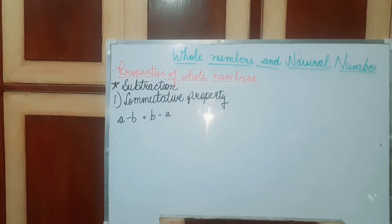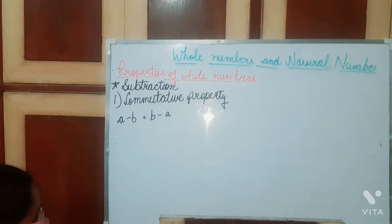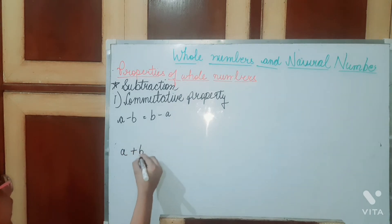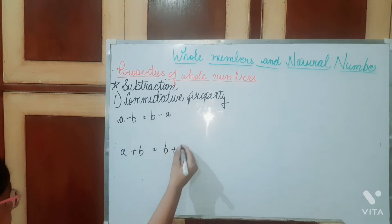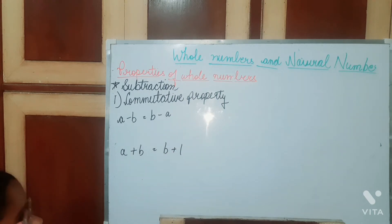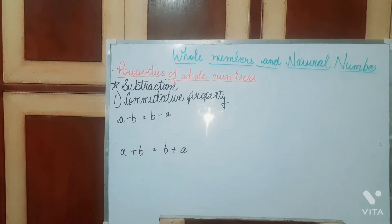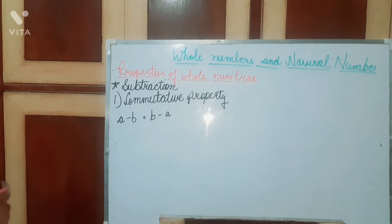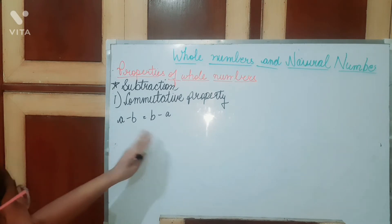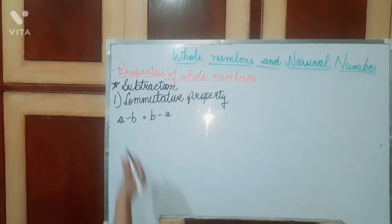Our next property is commutative property. The commutative property was studied in addition also, where we saw that a plus b is equal to b plus a — this holds for addition. But let's see if it holds for subtraction as well. The statement here is: a minus b is equal to b minus a.